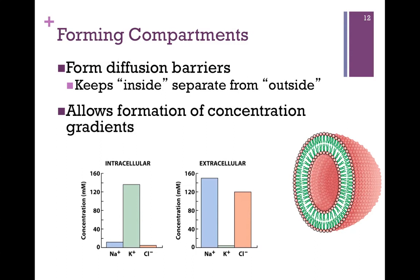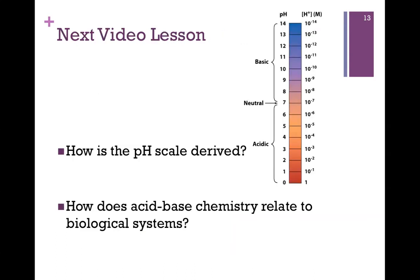What we find is that potassium concentration is much higher inside the cell, and sodium concentration is much higher outside the cell. We'll return to the importance of these concentration gradients in Chapter 9.